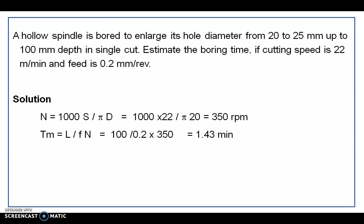The boring time equals L divided by F×N, where L is the depth of penetration — here 100 mm. F is given as 0.2 millimeter per revolution and speed we already found as 350 RPM. Once you work it out, the value is 1.43 minutes.